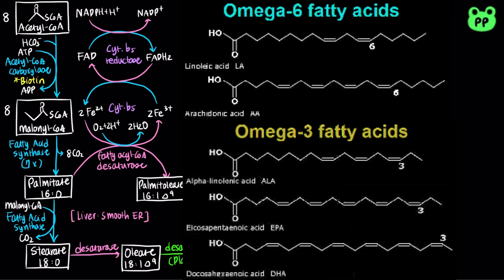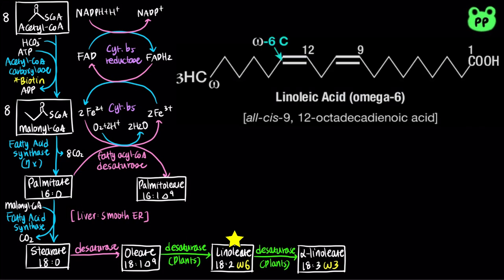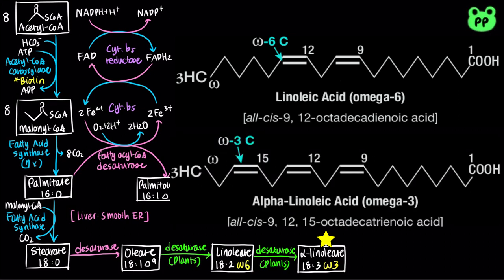Since double bonds usually occur in 3-carbon intervals, we can infer all the double bond locations simply from the number of double bonds and the omega number of the last double bond. In this case, we can infer that the 18-carbon linoleate contains 2 double bonds located at the 9th and 12th carbons, and the 18-carbon alpha-linoleate contains 3 double bonds located at the 9th, 12th, and 15th carbons.